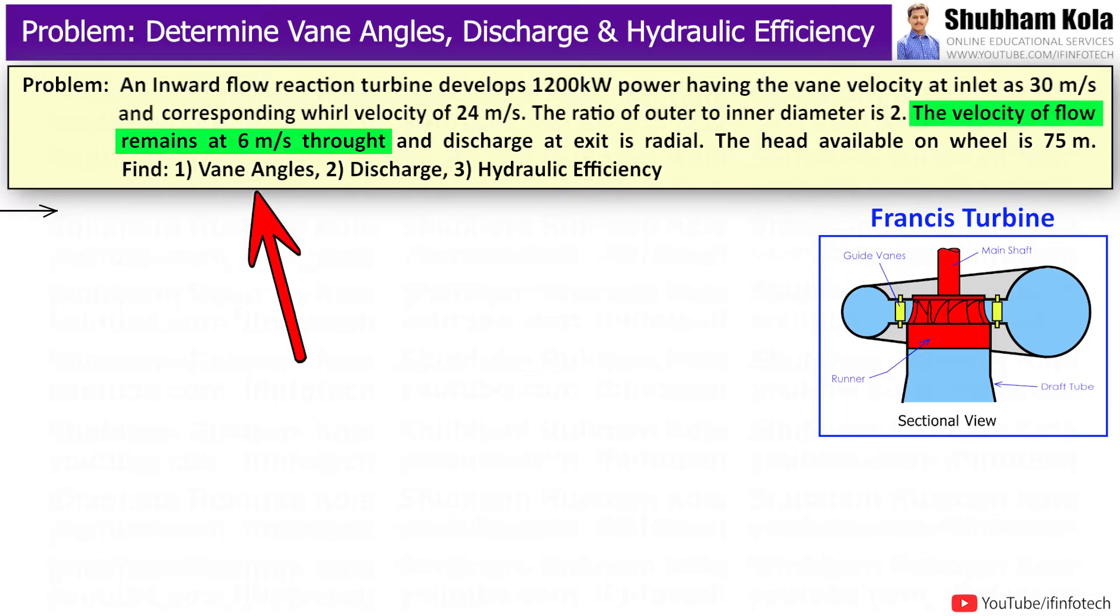The ratio of outer to inner diameter is 2. The velocity of flow remains at 6 m/s throughout, and discharge at exit is radial. The head available on wheel is 75 m. Find vane angles, discharge of turbine, and hydraulic efficiency of turbine.